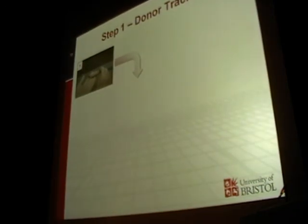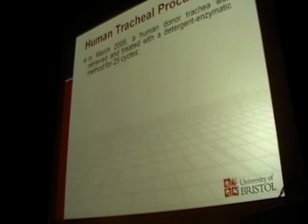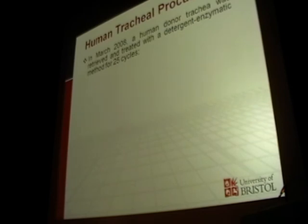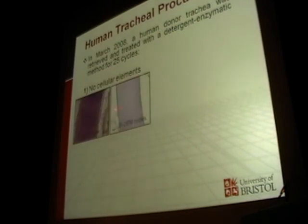In order to generate a new tissue engineered airway, we had to go through a number of different steps, each involving different teams from all across Europe. The first step was to obtain a donor trachea — in March of last year, a human donor trachea was obtained from a deceased organ donor; this work was done in Padua, Italy. If that trachea were simply transplanted into Claudia's body she would have rejected it, so all traces of the donor cells had to be removed using a mixture of detergents and enzymes. After each cycle of treatments, histological sections were taken to examine whether the donor cells had been successfully removed, and it was found that a total of 25 cycles of treatment over a period of about 6 weeks was needed to remove all of the cellular elements.